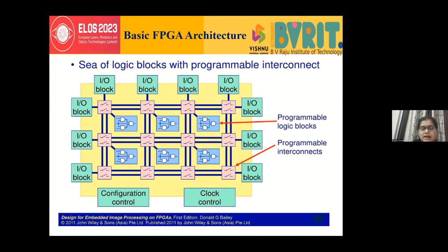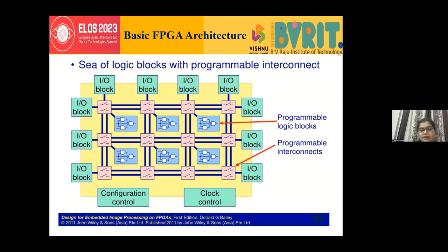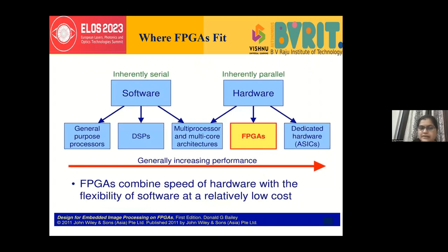An FPGA consists of logic blocks for AND, OR, and multiplication operations, plus I/O blocks and interconnects that communicate between values. This makes it very suitable for all kinds of mathematical analysis. We can then upload or dump our code onto the FPGA. This is why image processing and AI/ML work is increasingly moving toward hardware — to achieve real-time results and perform mathematical manipulations efficiently.